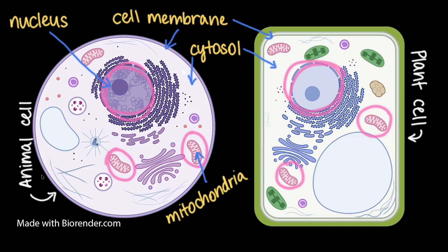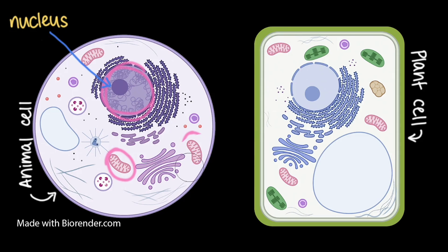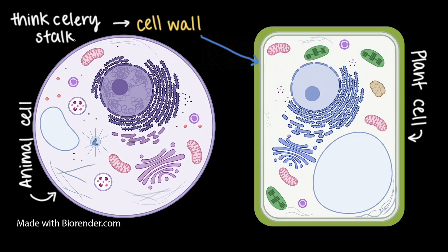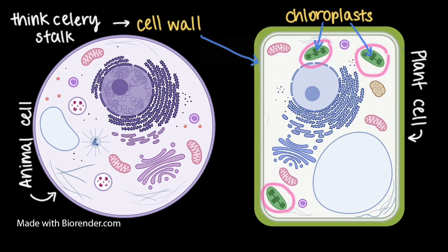Now that we've identified some features found in both kinds of cells, let's look closer to spot the fundamental differences between animal and plant cells. As you can see in this diagram, plant cells have an additional layer of material that surrounds the cell membrane. This is called a cell wall, which makes the plant cell more structured and stiff. Think of a celery stalk compared to a raw piece of chicken or fish — the animal muscle tissue is floppy, while the celery stalk is firm. That's cell walls in action. Also, plant cells have special organelles called chloroplasts, which are what give plants like the fern their green color. Chloroplasts are the site of photosynthesis, which is how plants make their own food in the form of sugars.